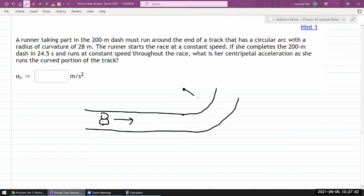Drawing circles freehand, and I'm given this radius of curvature of 28 meters. The runner starts the race at a constant speed. If she completes the 200-meter dash in 24.5 seconds and runs at constant speed throughout the race, that makes our question easier. I don't think that's necessarily realistic, but we'll work with that. So I'll assume the race ends somewhere here.